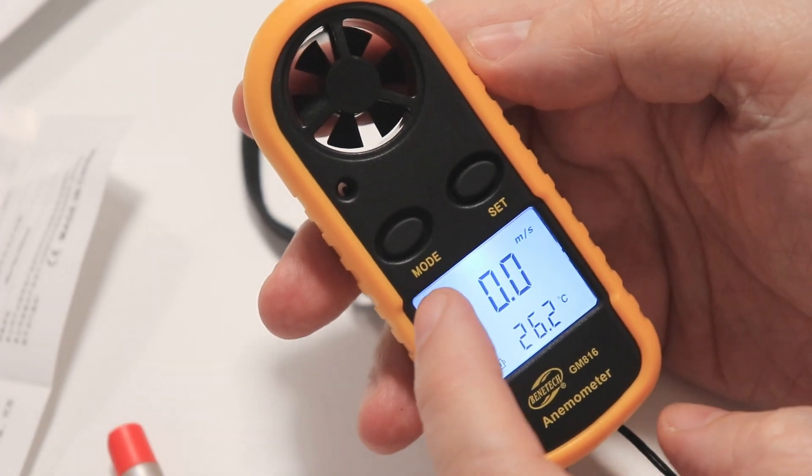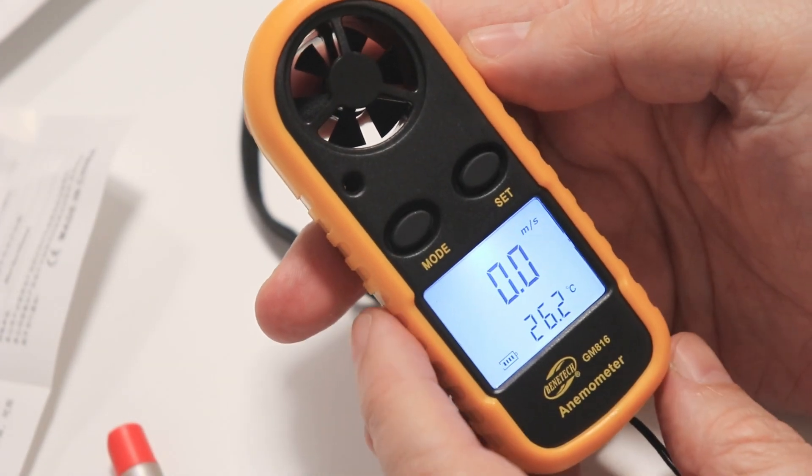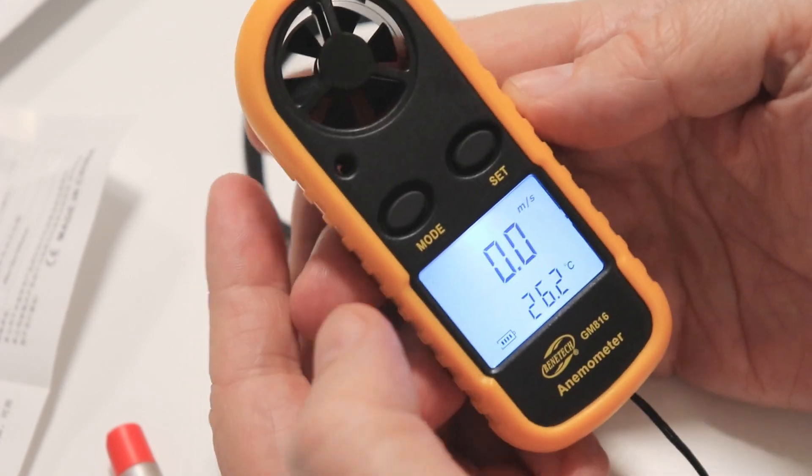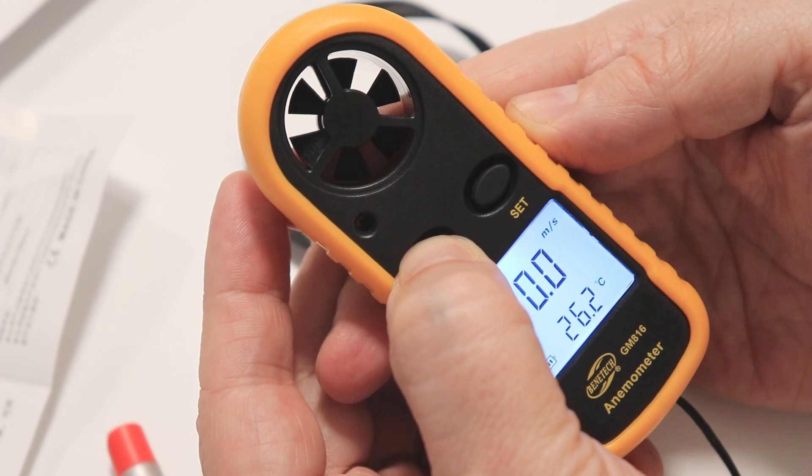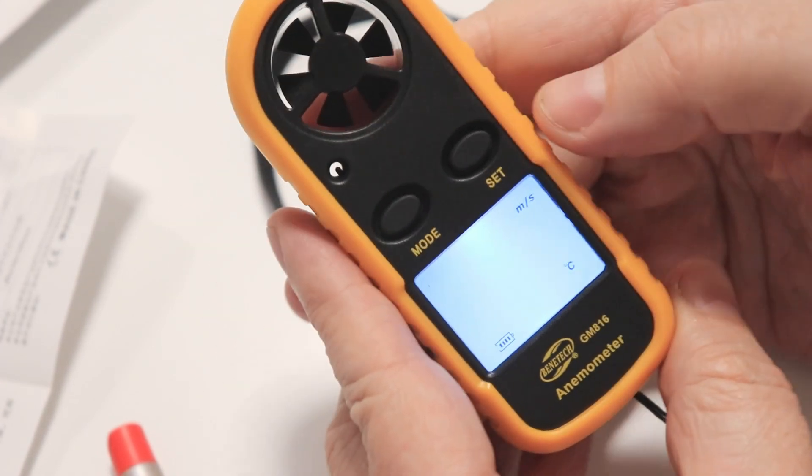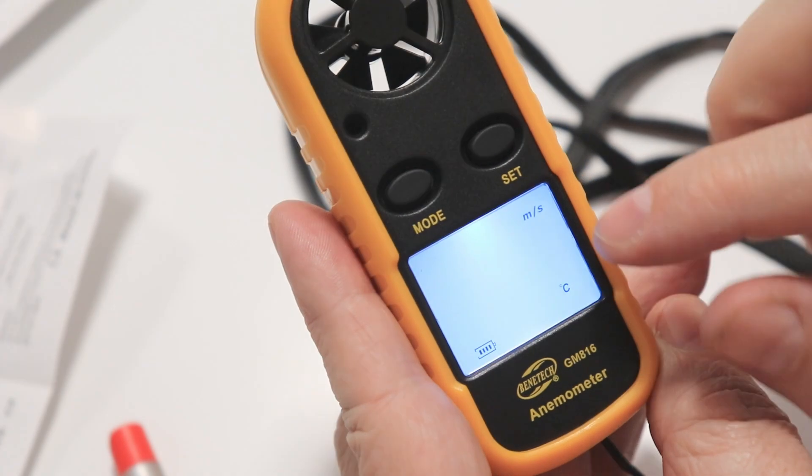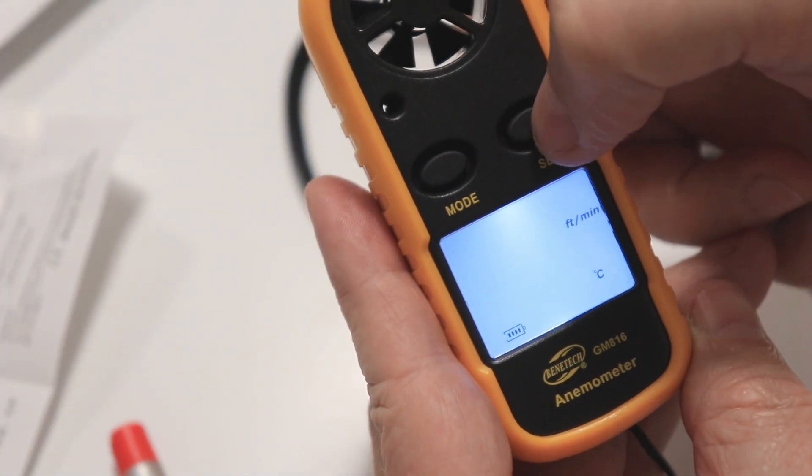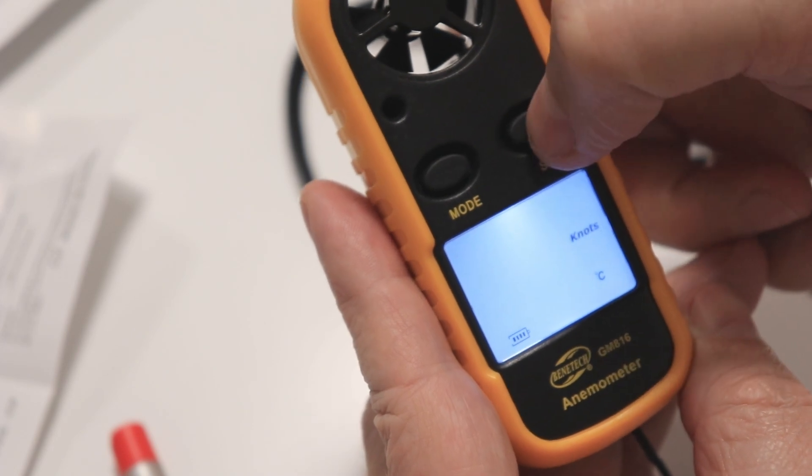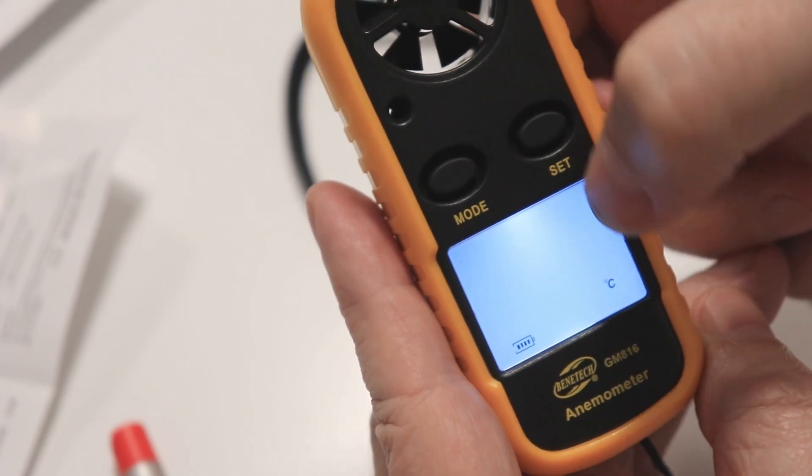Long press of the mode will enable the anemometer. And I already figured out, so long press of the mode button, we enter into settings. Now I can set the units: meter per second, kilometer per hours, foot per minutes, knots, miles per hour.